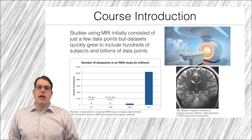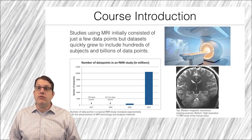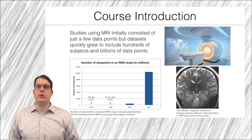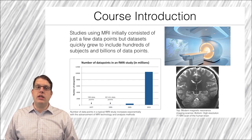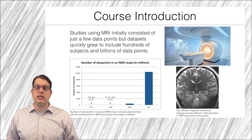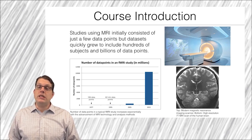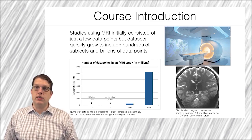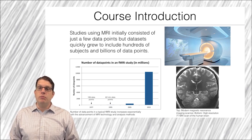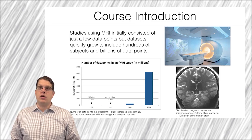Studies using MRI initially consisted of only a few data points, with the initial study in 1977 using only 106 individual data points. But this too has grown exponentially, with recent studies reporting over 10 billion data points in a single MRI study. This scale is even greater when we consider multi-site studies, like the Alzheimer's Disease Neuroimaging Initiative, which includes thousands of subjects at multiple sites who each complete multiple visits over time. In that sense, the analysis of modern neuroimaging data is a true big data problem.